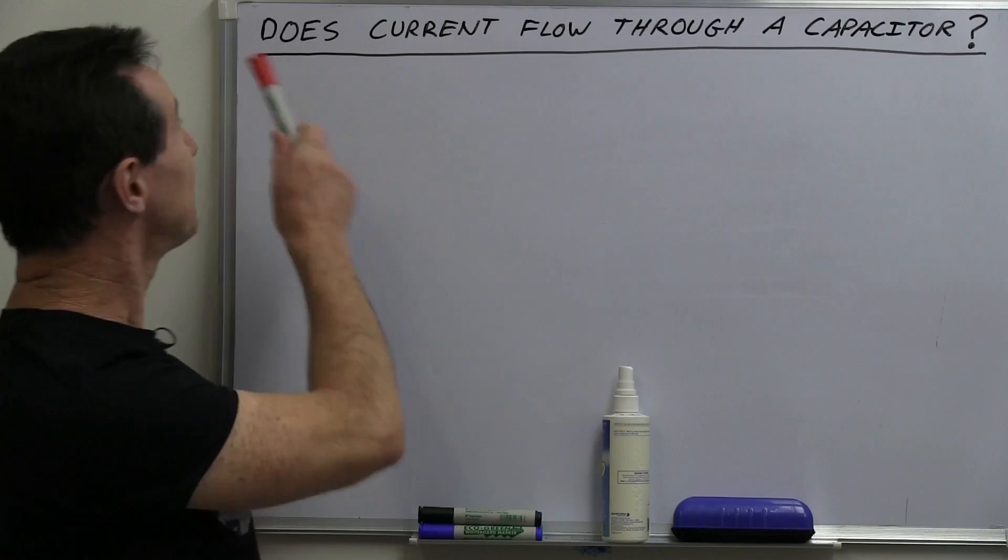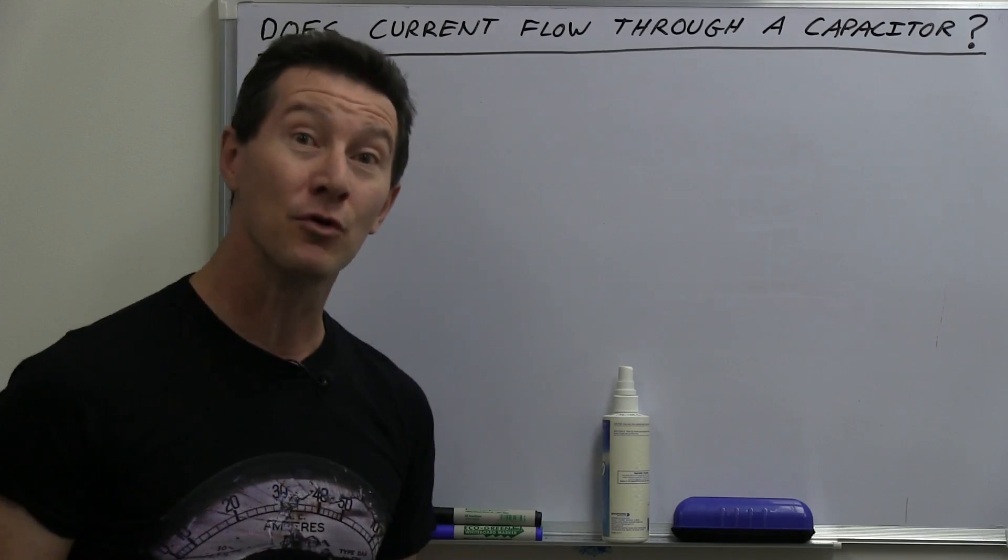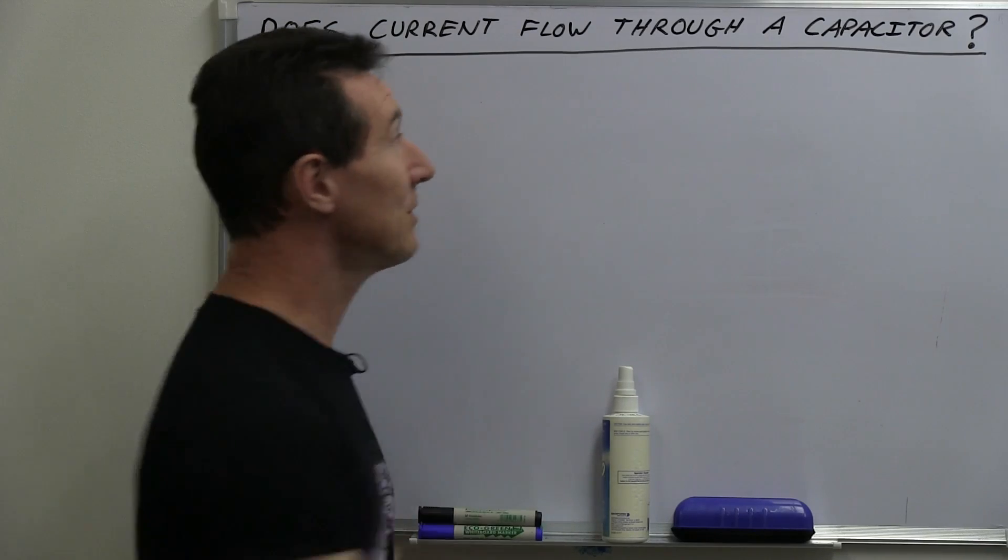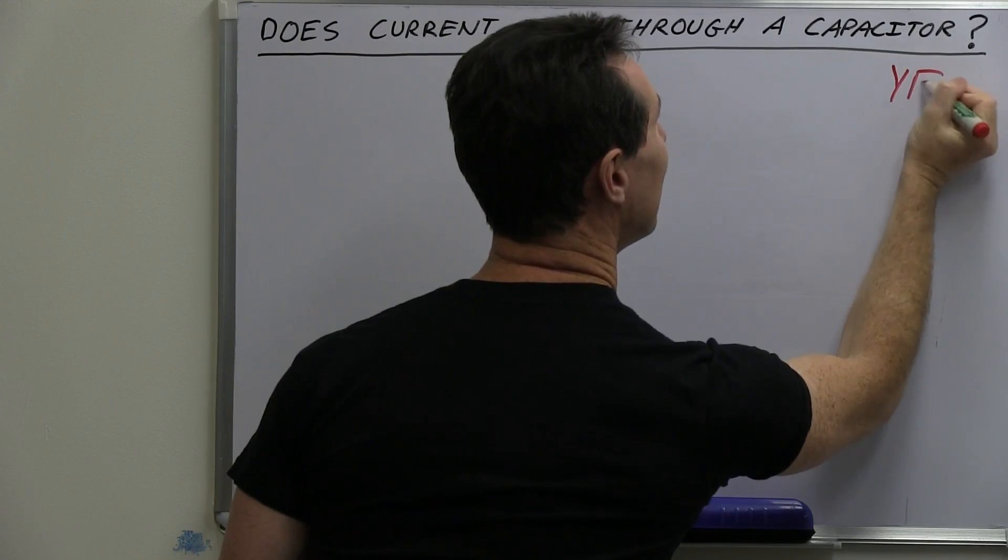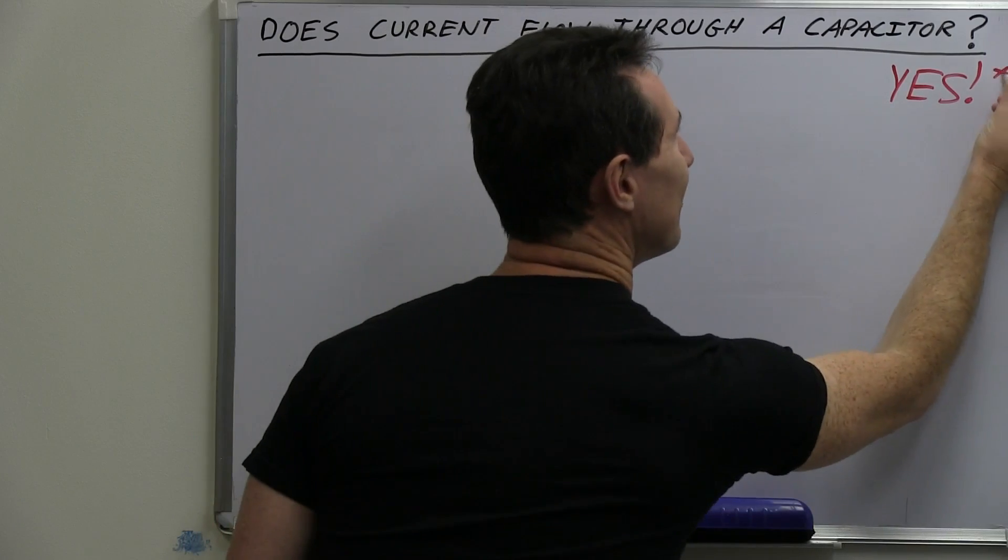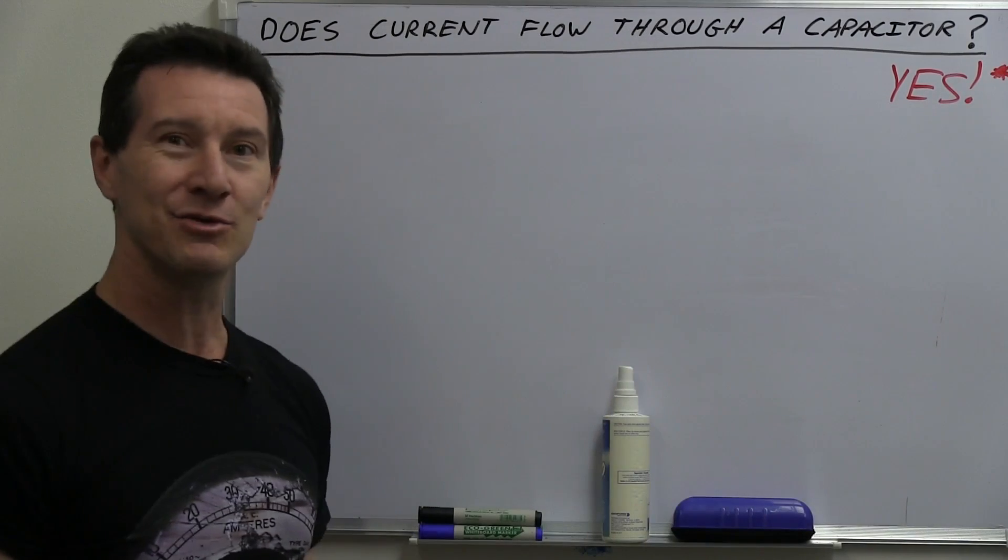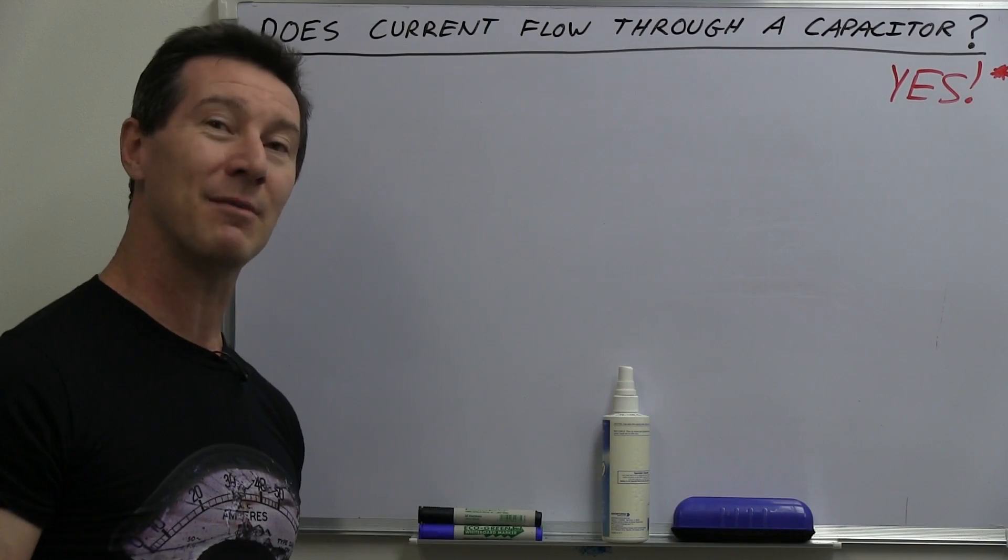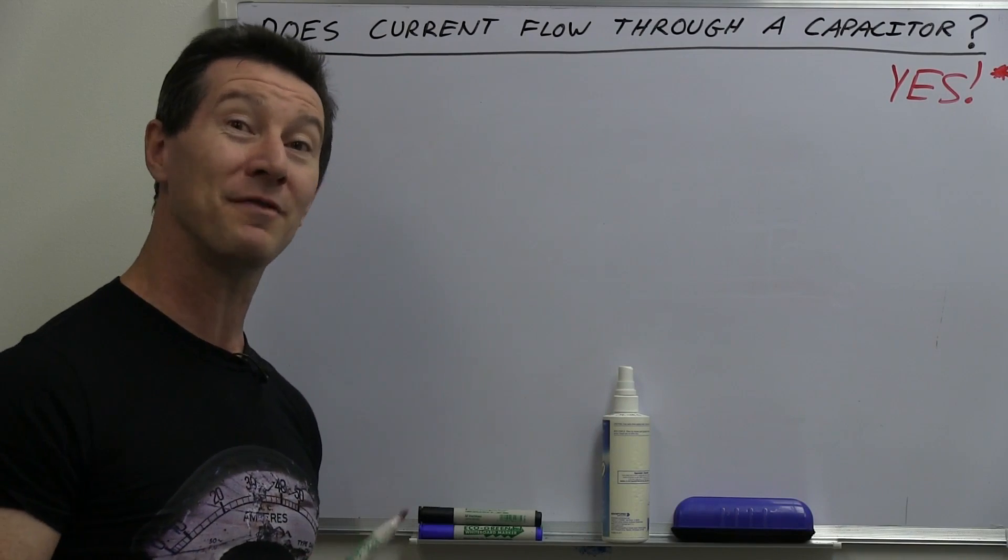But to answer the question, does current flow through a capacitor? The answer is, I can tell you right now, yes. Exclamation mark. But with a little asterisk next to it. And that's where this video comes in. We're going to talk about the asterisk.